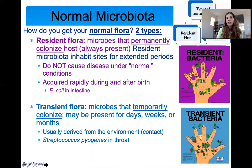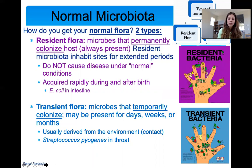Two final terms: you get your normal flora through either resident flora or transient flora. Resident flora are microbes that permanently colonize the host — they're always there and don't cause disease under normal conditions. Transient flora are microbes we pick up temporarily, present for days, weeks, or a month — maybe you contacted something by touching a door. Your normal flora consists of both. If you were to sequence your microbiome, you would get both your resident flora and your transient flora.